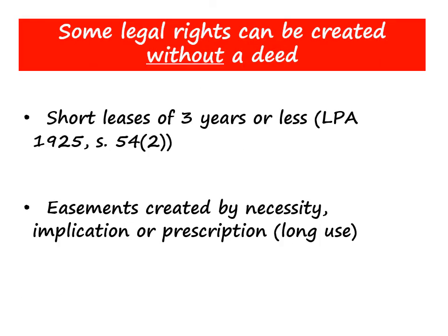There are some exceptions to the requirements for a deed. The most important ones you'll come across are short leases of three years or less. So if you have a tenancy — for example a lease of your student accommodation — and you don't remember having your signature witnessed, don't worry, it will fall within this exception. If it's a short lease, it will be legal even if you didn't sign a deed. The next exception is easements created by necessity, implication, or prescription, which is long use. These types of easements are always legal.